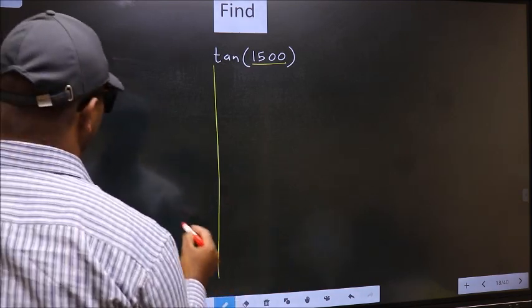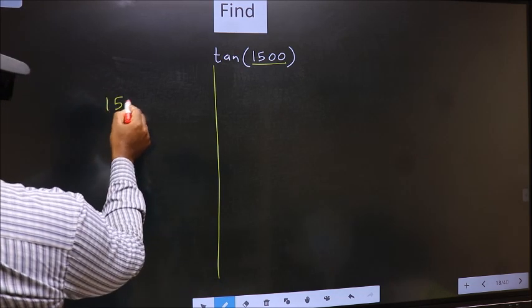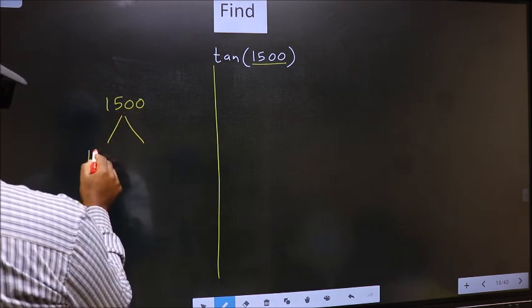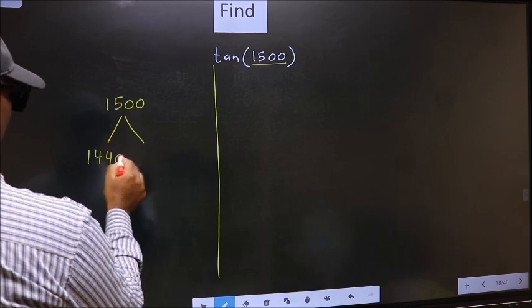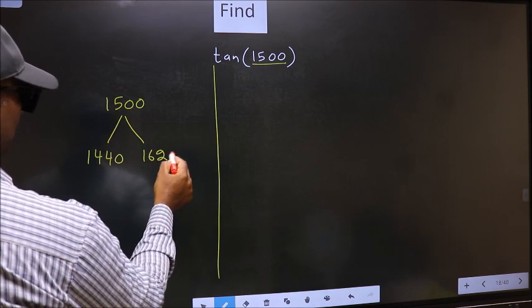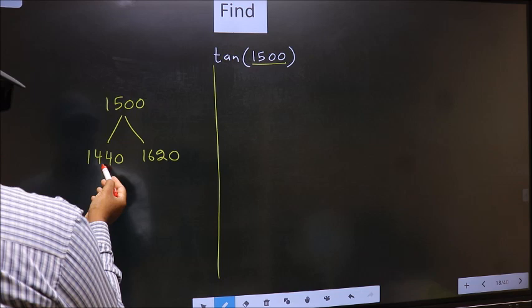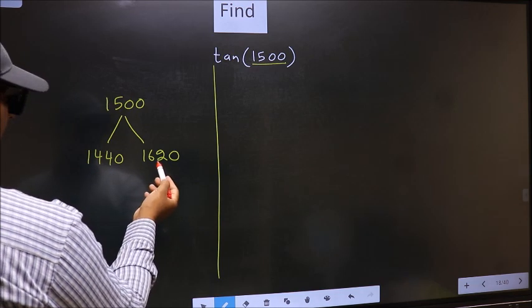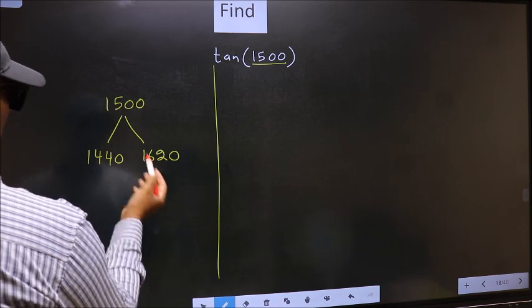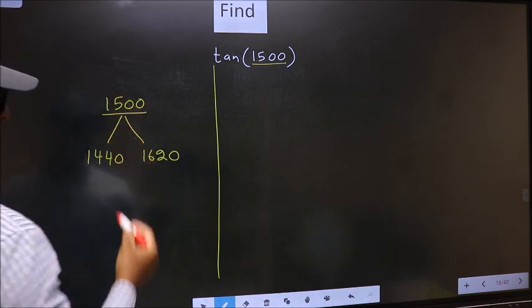What I mean is 1500 lies between 1440 and 1620. This is 180 into 8, and this is 180 into 9. Between these two numbers, 1500 lies.